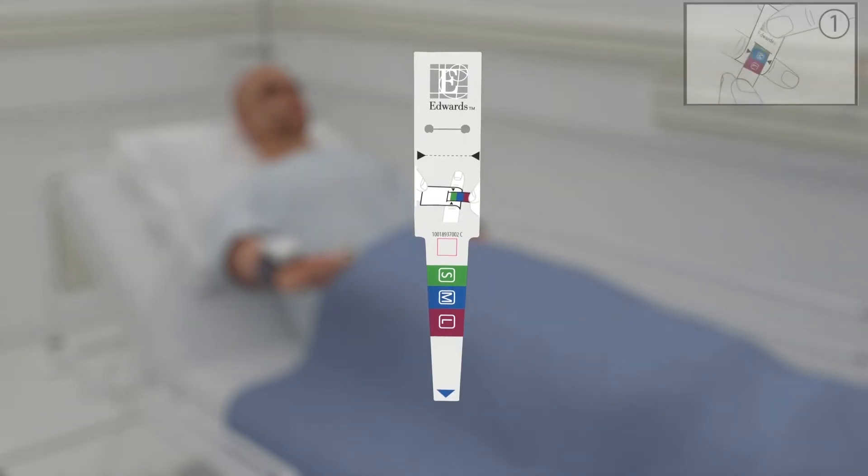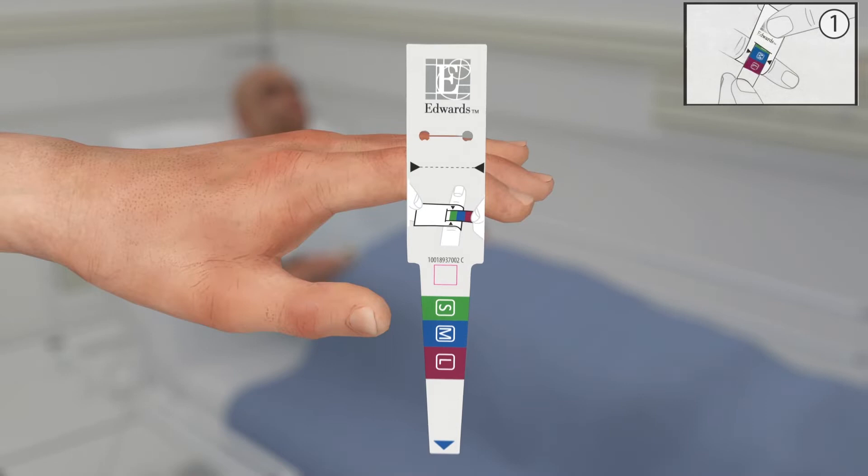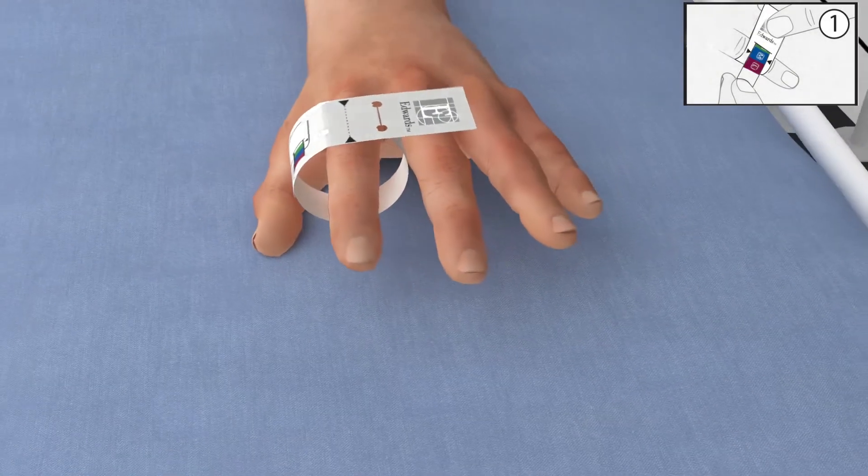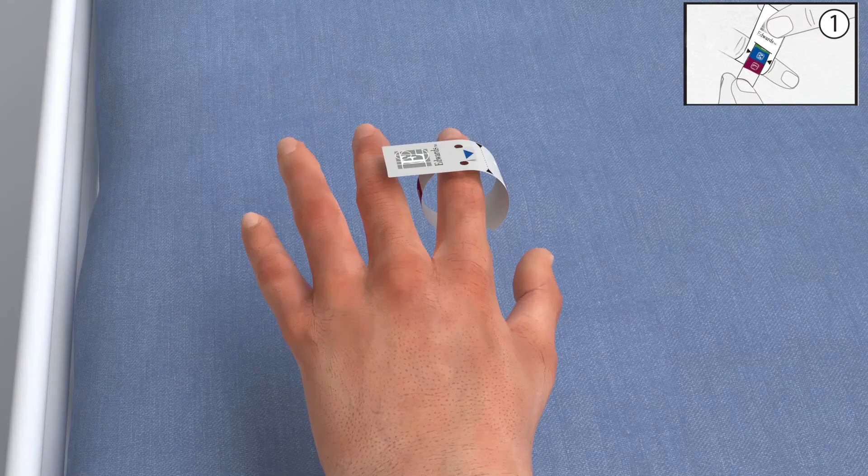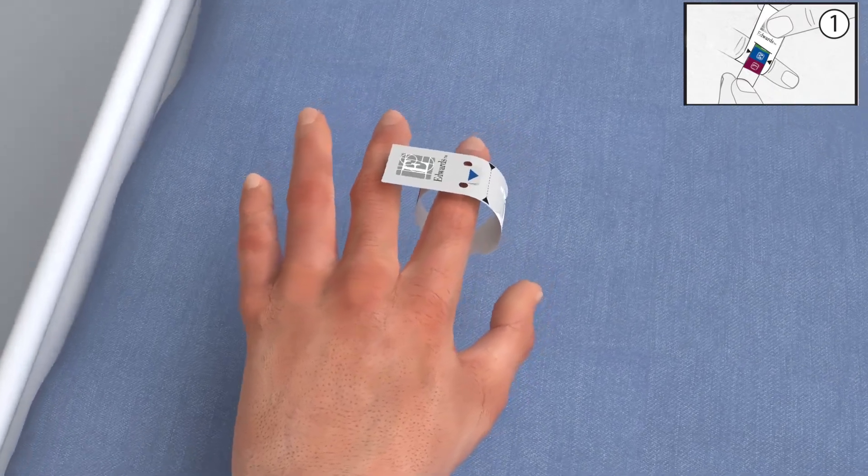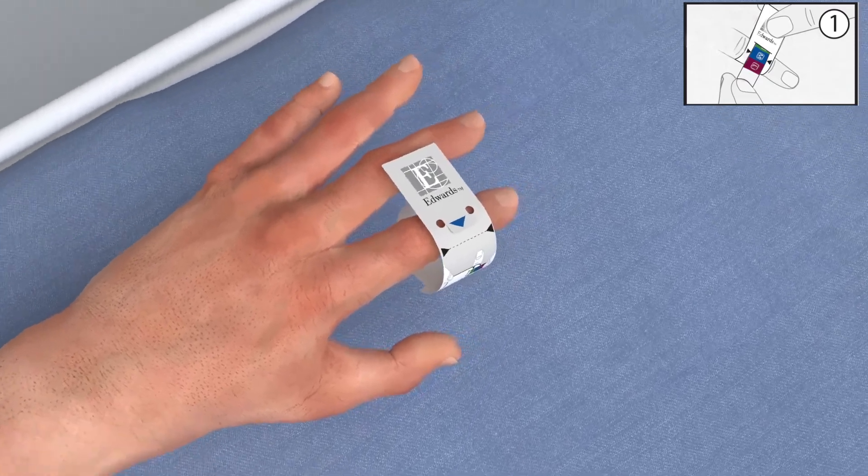First, use the AcumenIQ Finger Cuff Sizing Aid by wrapping it around the middle phalanx of the index, middle, or ring finger of the patient. Pull the smaller end of the color-coded aid through the slot until snug.